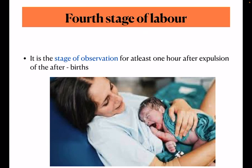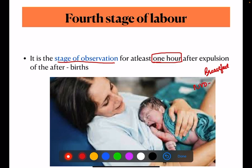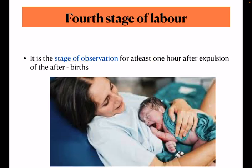Fourth stage of labor is the stage of observation, for at least one hour after expulsion of the afterbirth. During this stage, breastfeeding is initiated — in normal vaginal delivery, it should be started within 30 minutes of delivery. We observe the mother's and baby's vitals, and the mother is encouraged to void. The fourth stage is also called the stage of observation.